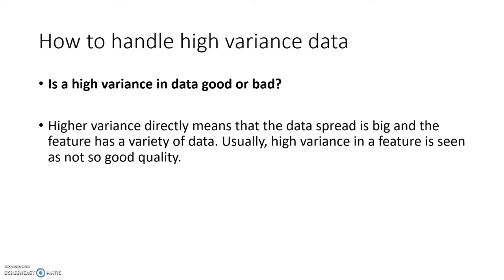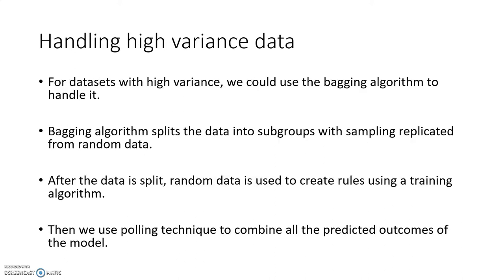Now I'm going to talk about how to handle it. When you handle high variance data, we normally use the bagging algorithm. In this algorithm, the data is split into subgroups with sampling replicated from random data.